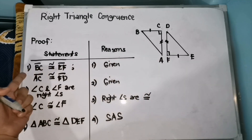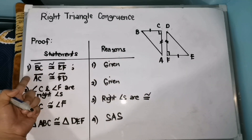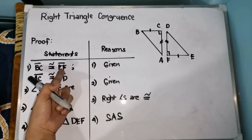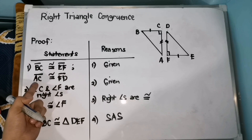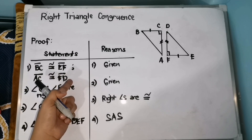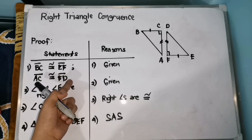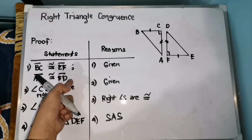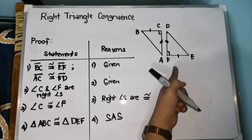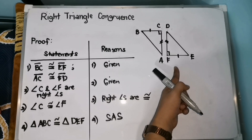Since segment BC is congruent with segment EF and segment AC is congruent with segment FD, we can say that the two triangles are congruent because the two legs are congruent in the given right triangles.